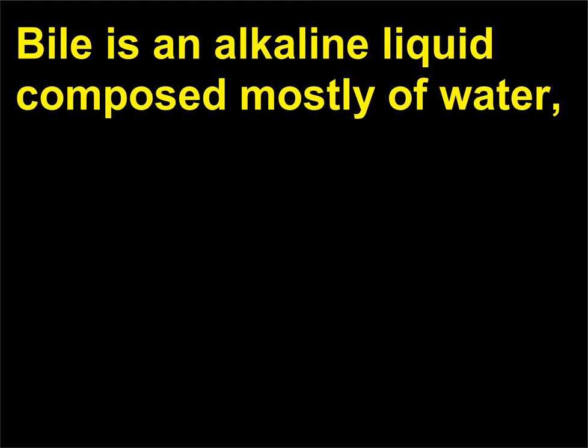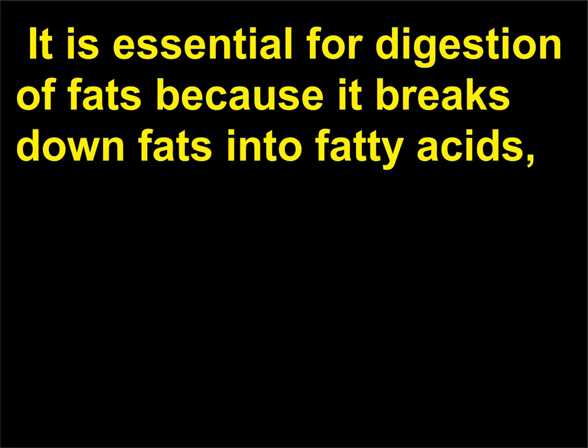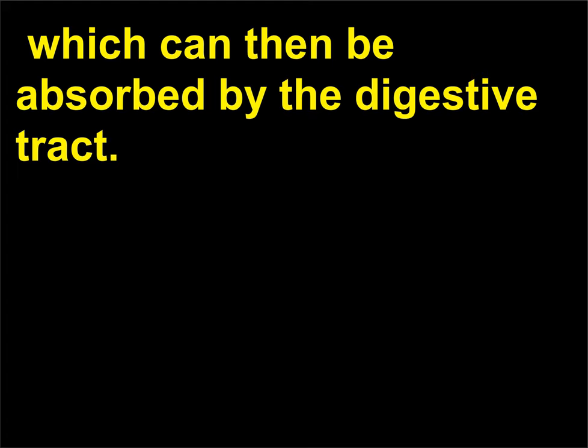What is bile? Bile is an alkaline liquid composed mostly of water, bile salts, bile pigments, bilirubin, fats, and cholesterol. It is essential for digestion of fats because it breaks down fats into fatty acids, which can then be absorbed by the digestive tract.